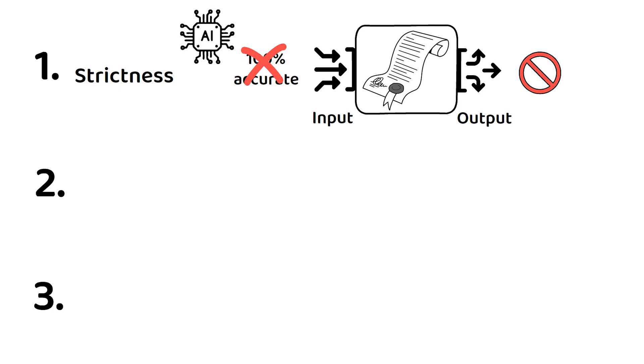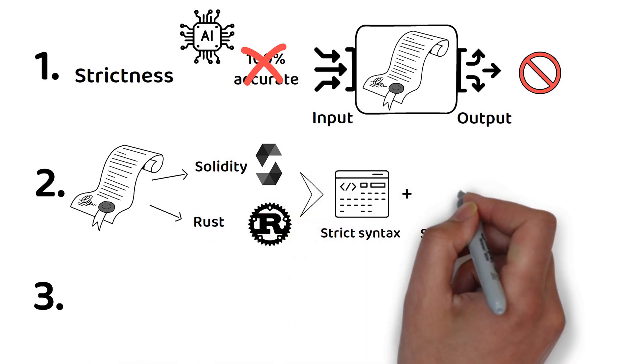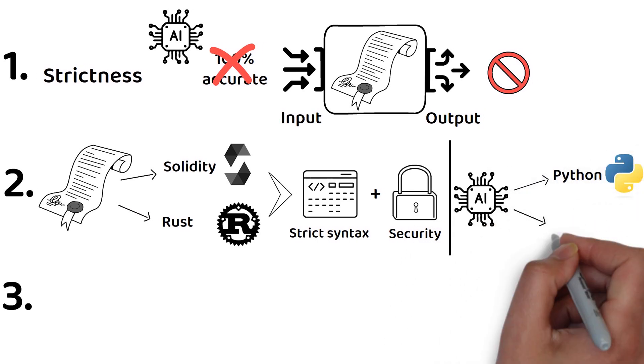Next, most high-level smart contracts are written in the Solidity or Rust programming languages due to their stricter syntax and better security, whereas most AI models are typically written in Python or Java.